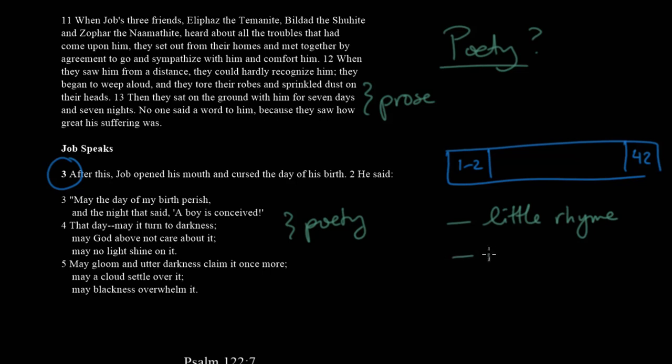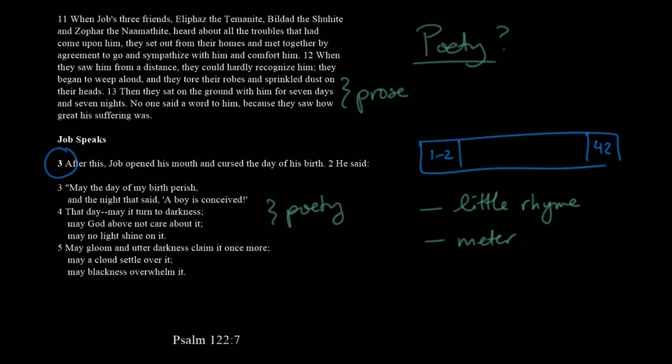What about meter? By meter we mean the rhythm of the line. If you think of a Shakespeare sonnet, it has a particular rhythm — that's what we call iambic pentameter. Meter is one of the most contested parts of Hebrew poetry. Some scholars say yes, some say absolutely not. You really have to be able to read the original Hebrew, but many scholars feel that meter is not a significant feature and that it's very difficult to determine what the meter might be.